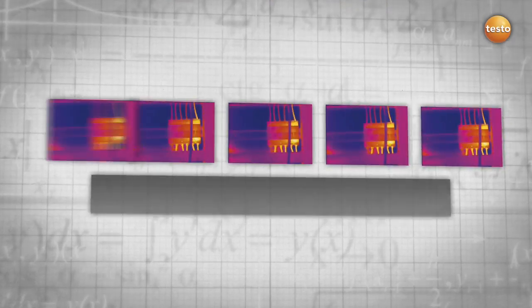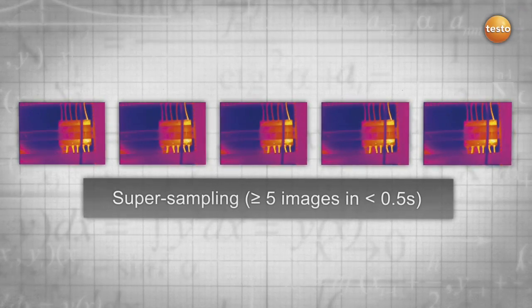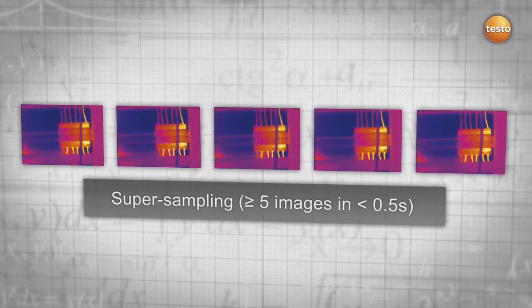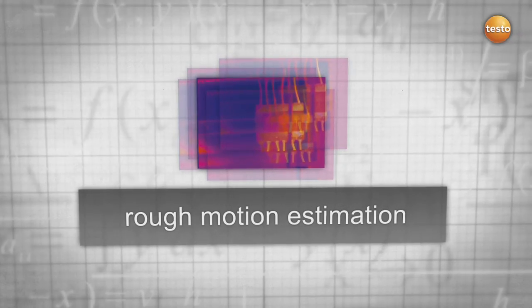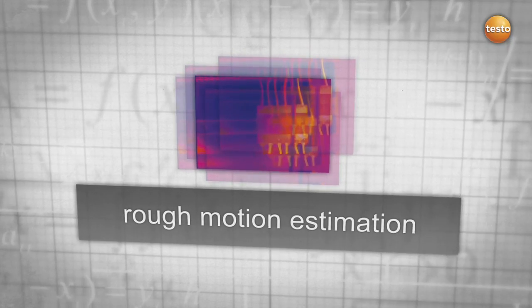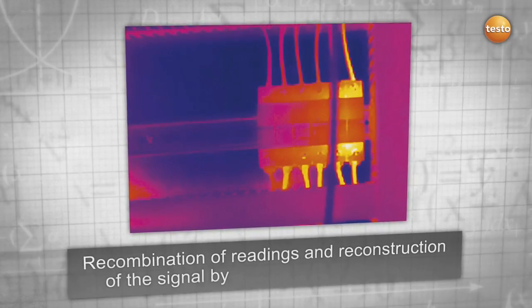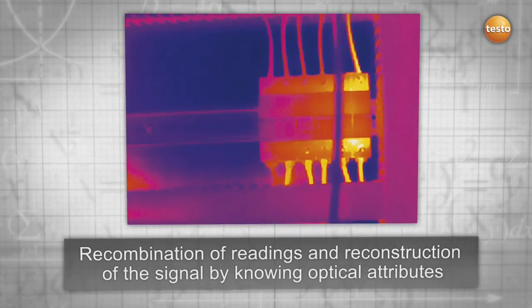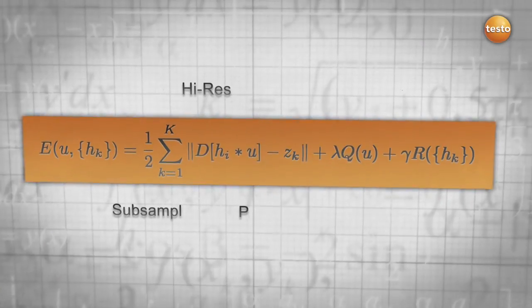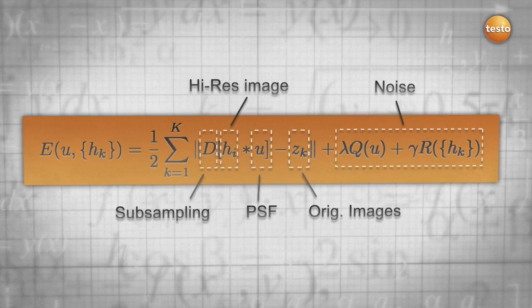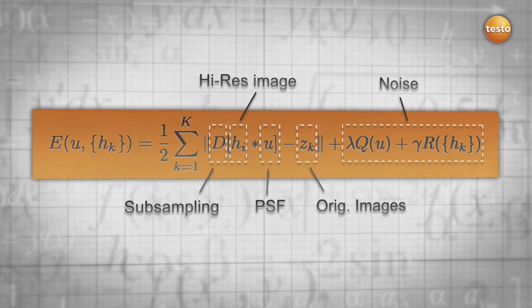The technology works as follows: the thermal imager takes multiple images in less than 0.5 seconds. They are combined in one high-resolution image, uniting the technologies of super sampling and deconvolution. This process is reflected in the formula that was exclusively developed for the Testo Super Resolution technology.